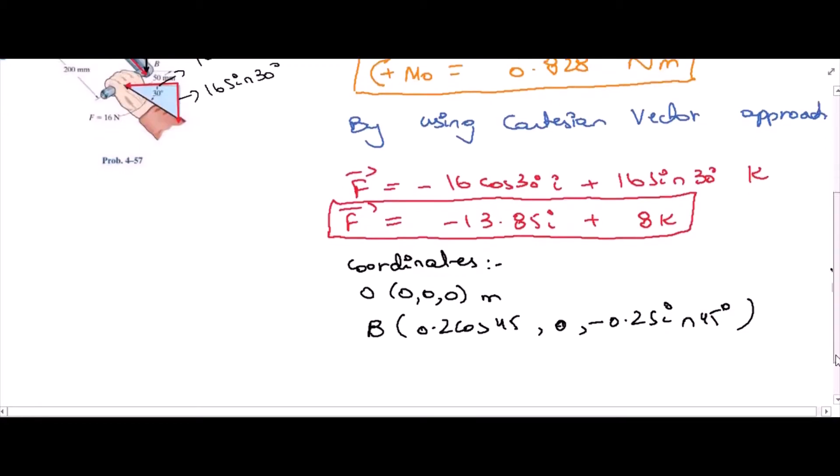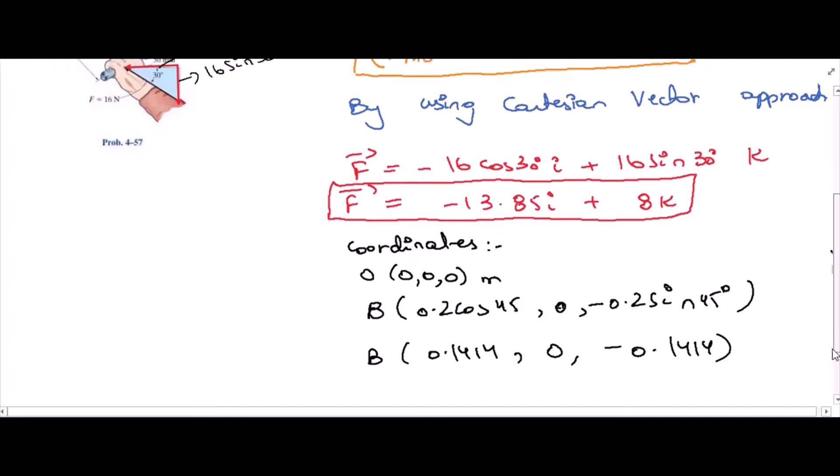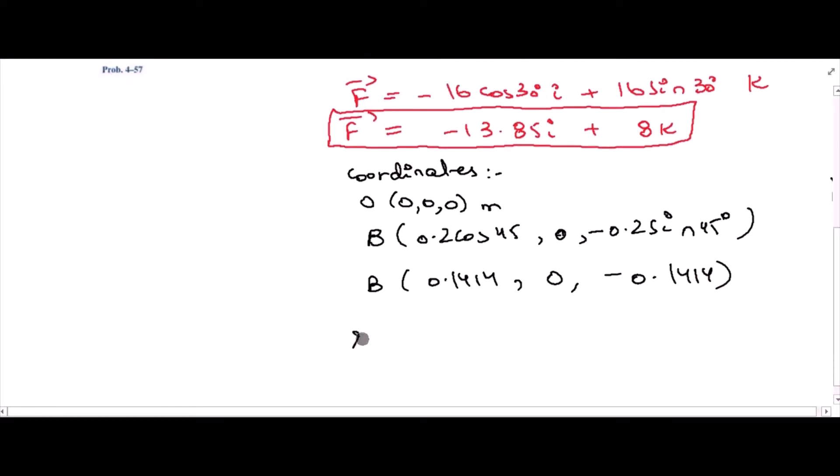So we can also write point B as 0.1414 i, 0, negative 0.1414 k. So now we have to find the moment arm. The moment from r_OB is equal to coordinates of point B minus coordinates of point O, so it is 0.1414 i plus 0 j minus 0.1414 k.